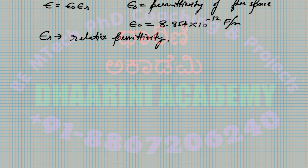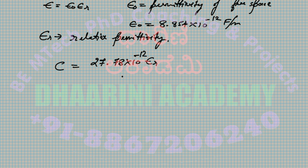Substituting back, C becomes ε₀ · π · (1/ln(2D/d)), which simplifies to approximately 27.78 × 10⁻¹² · εᵣ / ln(2D/d). We keep εᵣ here because, unlike the inductance case where we could assume a non-magnetic material, every real material has some εᵣ value. For resistance, the standard equation ρL/A applies, but we must use unit length values.